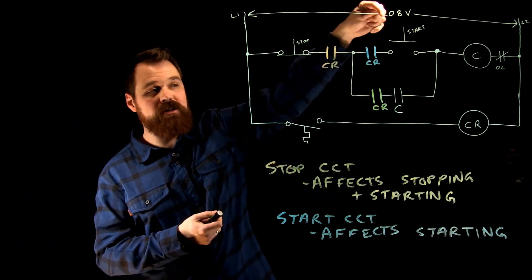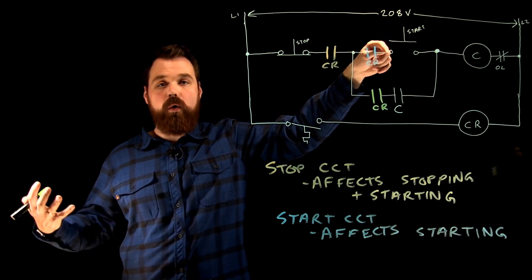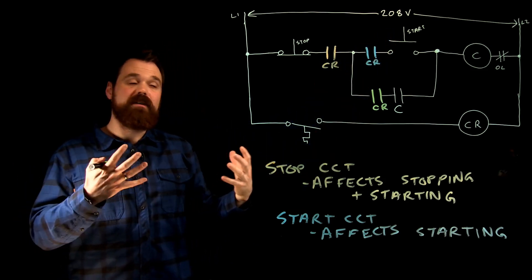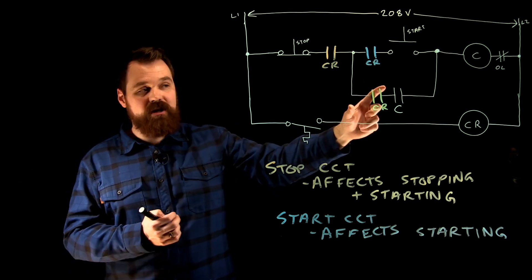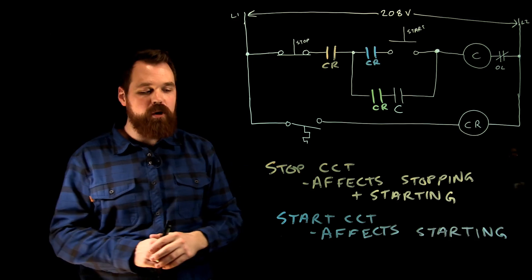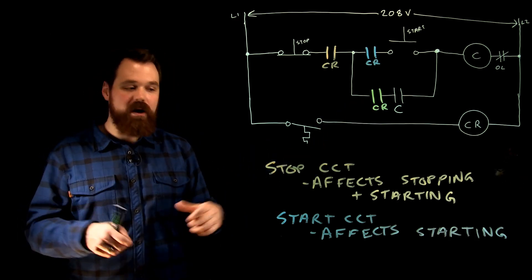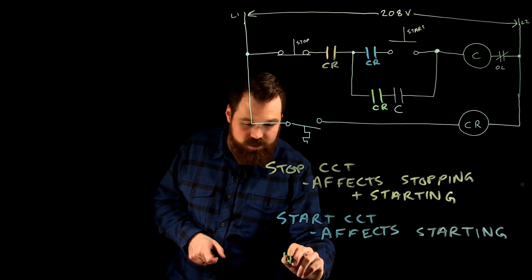However, we could still press the start button and start the motor. It just wouldn't hold. So we can actually call that a little bit of jogging in that if this set of contacts were to open, we can use the start button to jog or bump forward the motor. So all this set of contacts really affects is the holding or the running of the motor. So if we put it in the holding circuit, we just say it affects the running of the motor.